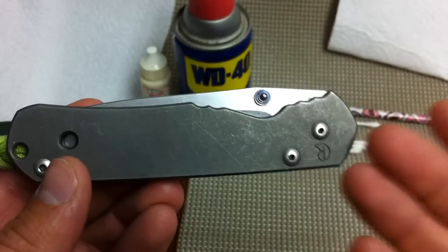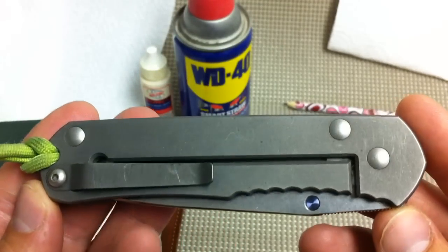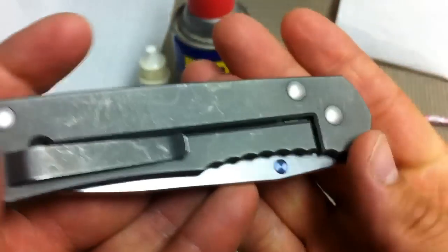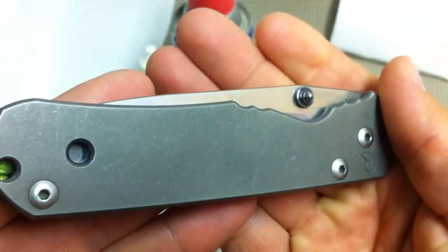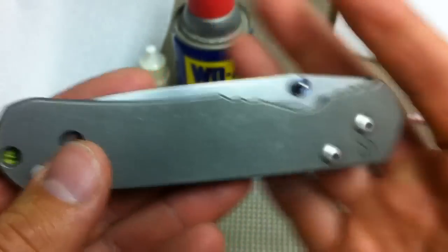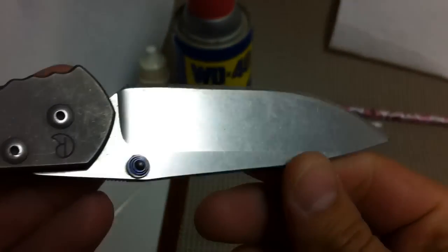This BG42 Sebenza is 16 years old. This was born around 96. And for many a Chris Reeve knife buyer, this is, I dare say, a Grail EDC. The large, regular profile BG42 blade.